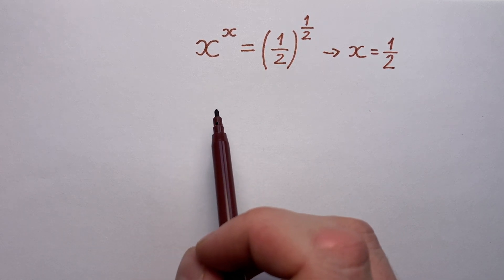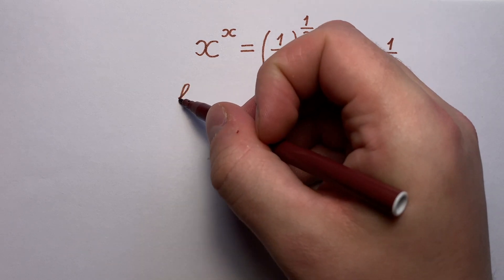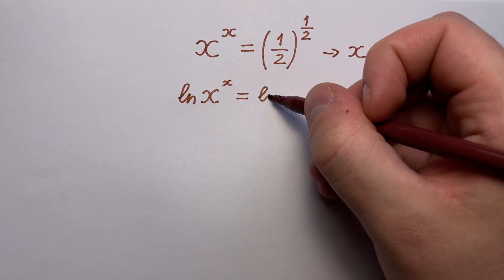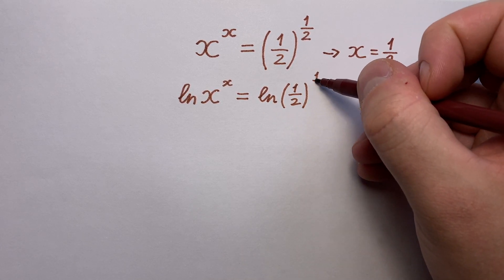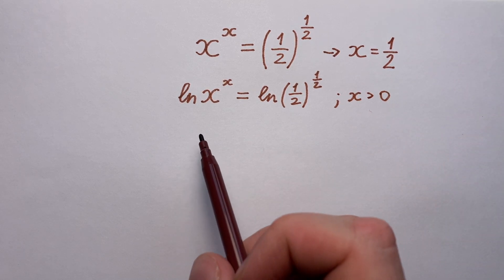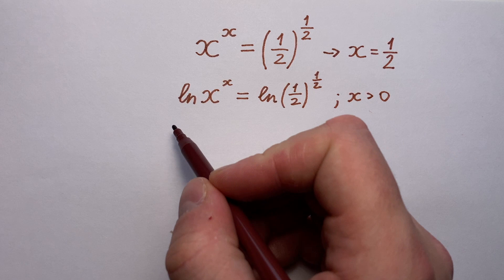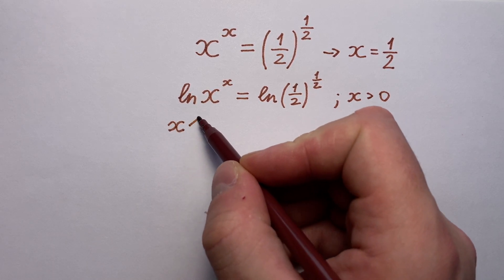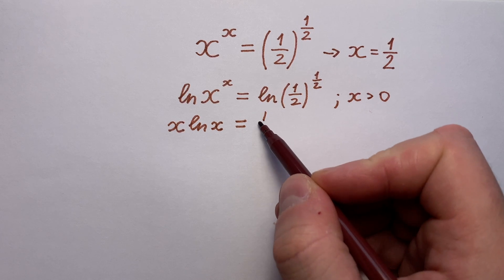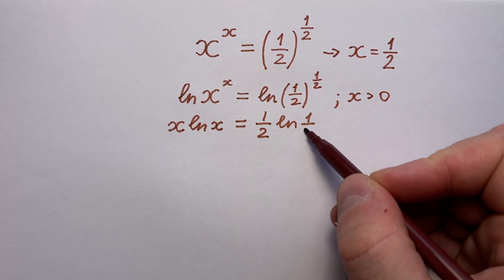First, let's take the natural logarithm from both sides. We have natural logarithm of x to the power of x equals natural logarithm of one half to the power of one half. Of course, we know that x is bigger than zero. Then, using properties of logarithm, we can write this as x times natural logarithm x equals one half times natural logarithm of one half.